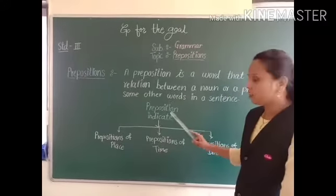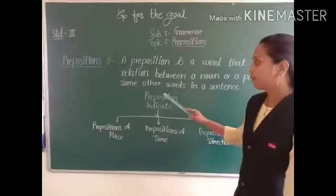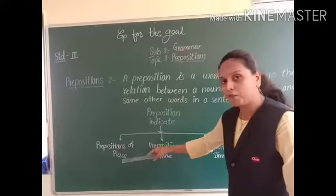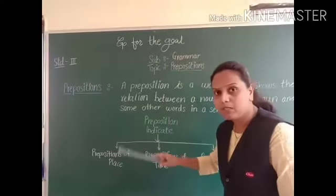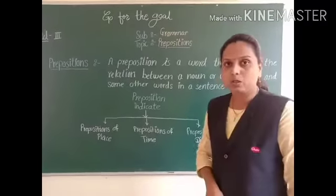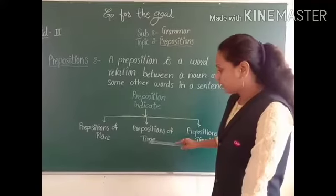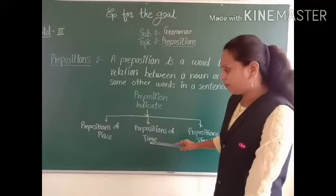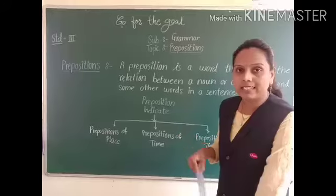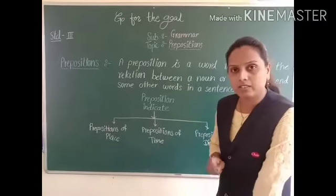Preposition indicates — see here — prepositions of place, means where is the thing, person or place. Preposition also indicates time, such as at morning, at evening, at night, on twelve o'clock — like that.